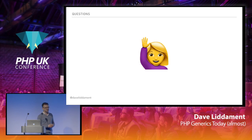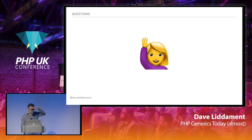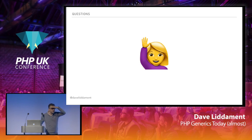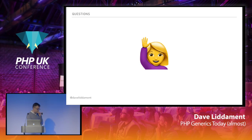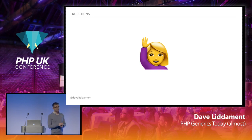If you use something like Psalm, it tells you what percentage of all types it has inferred or understands. If that's a high number, it's probably safe to remove those type checks. If it's a low percentage, you're probably going to have to make some kind of compromise. Q: Which IDEs support this right now? And are there major differences between Psalm and PHPStan's syntax? A: Unfortunately, no IDEs support the @template annotation or the array notation with both key and value. If anyone is working on a PHP IDE, please think about adding that.